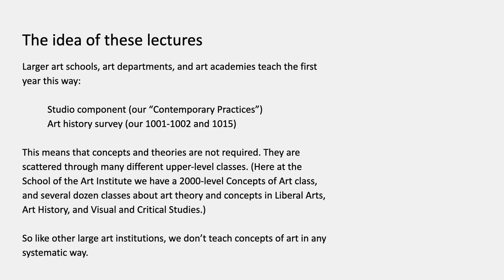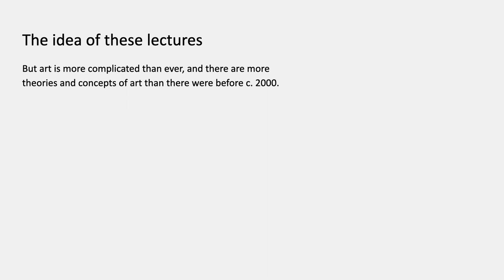Like other large art institutions, the School of the Art Institute doesn't teach concepts of art in a systematic way. But art is more complicated than it ever has been, and there are more theories and concepts of art than there were before, say, 2000 — more in 2000 than in 1960, and so on. The numbers of concepts, isms, theories, styles, problems, and problematics in art and the art world is increasing exponentially.